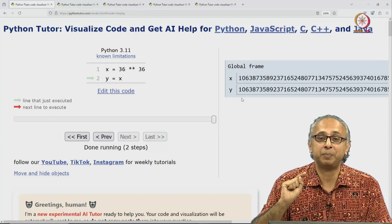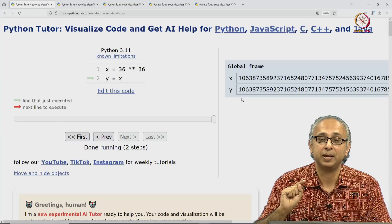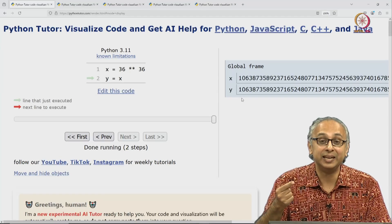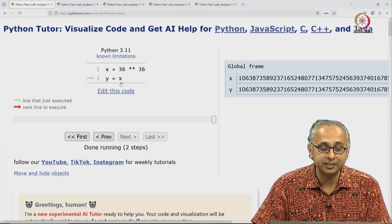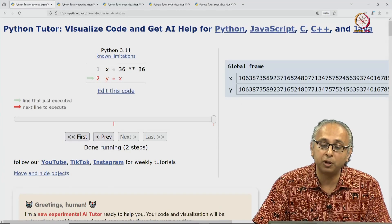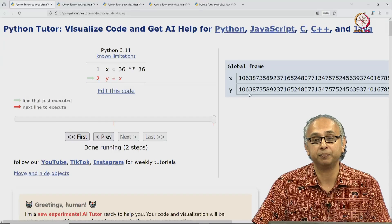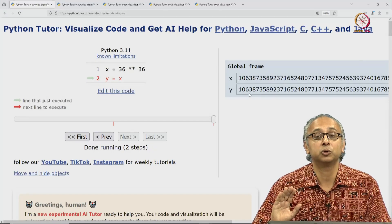This is the default Python Tutor visualization and it is misleading. It can make you think that x is like this box and when I do y is equal to x, I'm really copying all this information over here. But that's not what is happening.